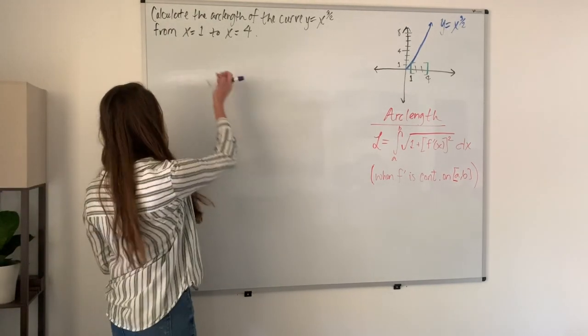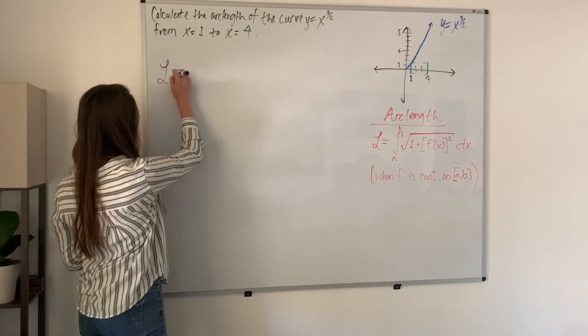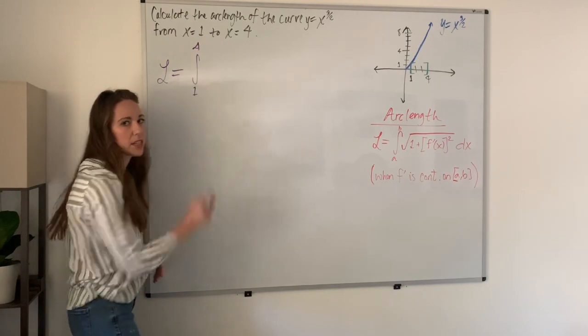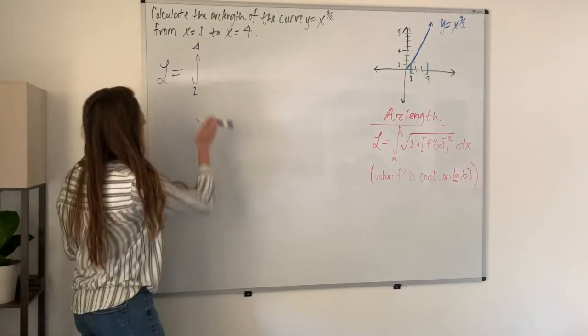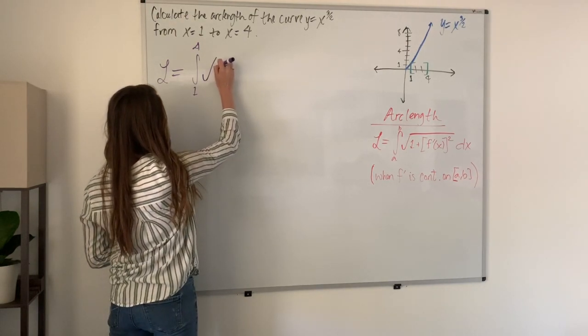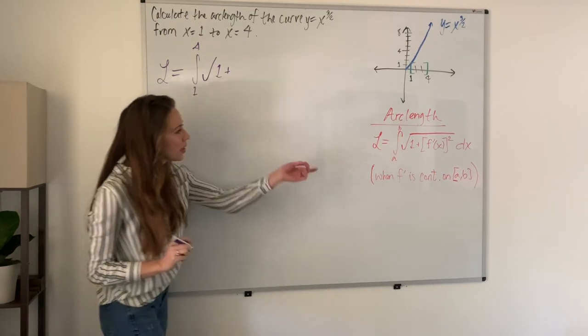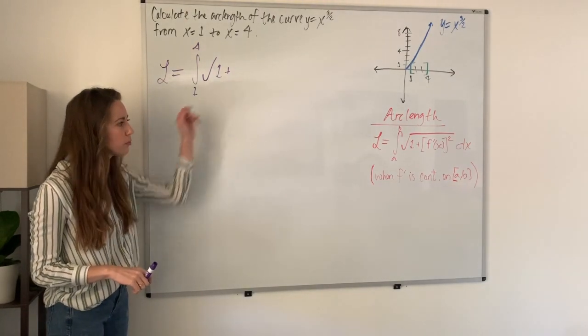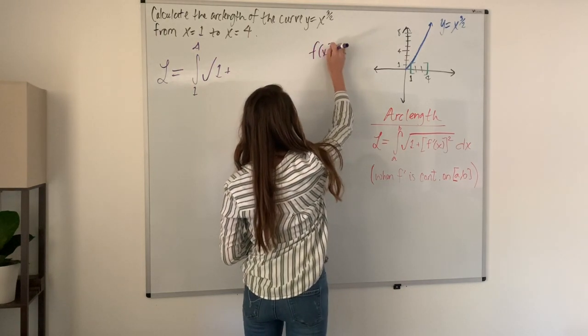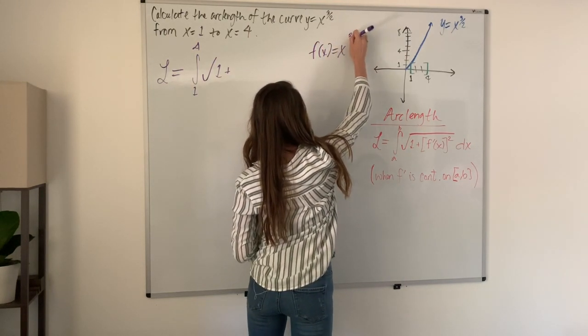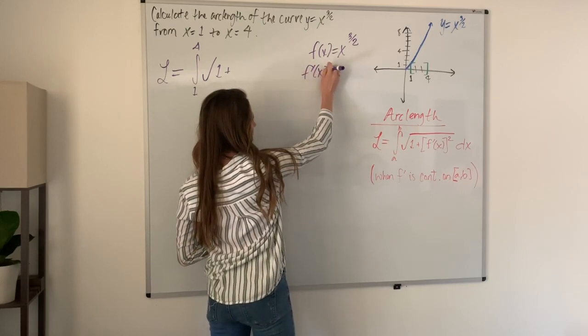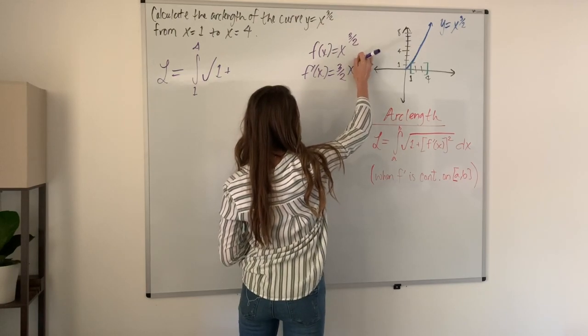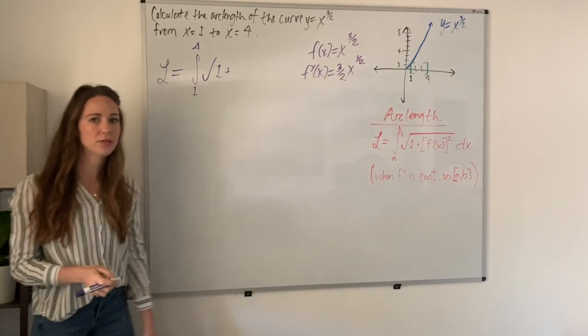We're looking for the arc length L from 1 to 4. We're given our bounds here in the question. Now we need to know the derivative of this function before we move on. Our function is x to the 3 halves power. Using the power rule, the derivative is 3 halves times x to the 1 half power. That's our derivative function.